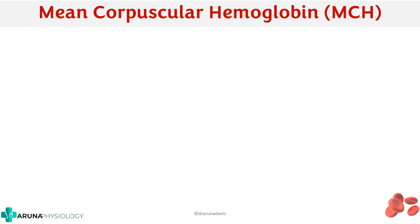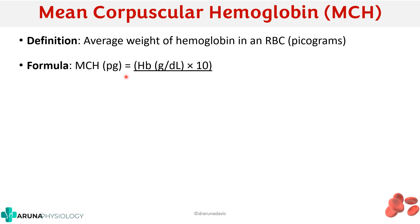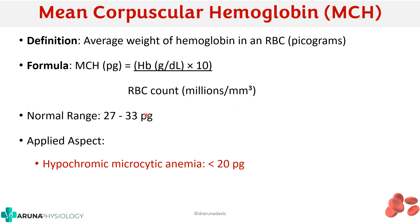The next index is mean corpuscular hemoglobin, or MCH. It is defined as the average weight of hemoglobin in an RBC and is expressed in picograms. The formula is hemoglobin in grams per deciliter multiplied by 10, divided by RBC count in millions per millimeter cube. The normal range is around 27 to 33. If the hemoglobin concentration is less than 20, it is considered hypochromic, and this is mostly associated with microcytic anemia.